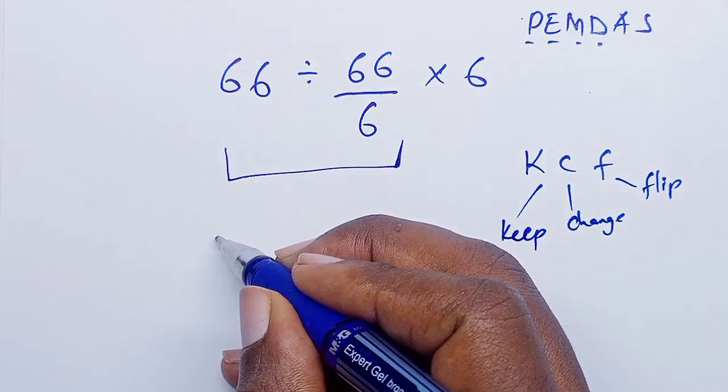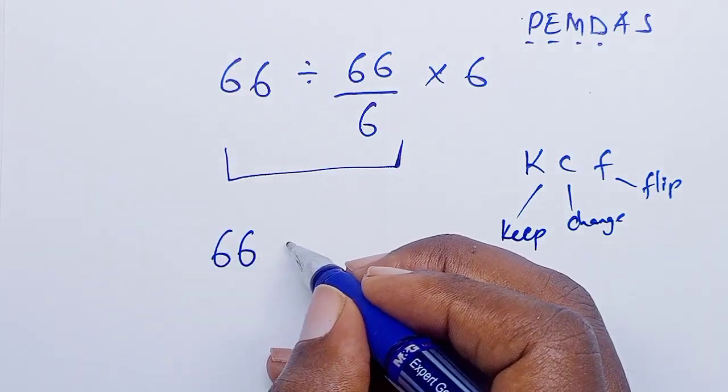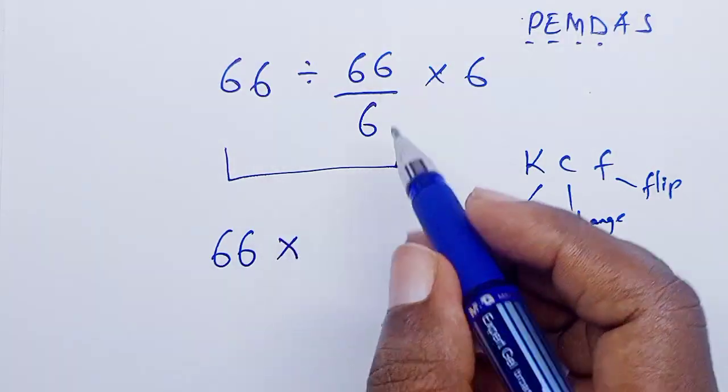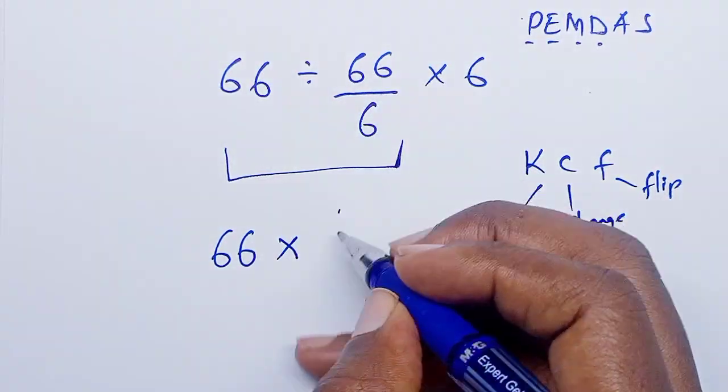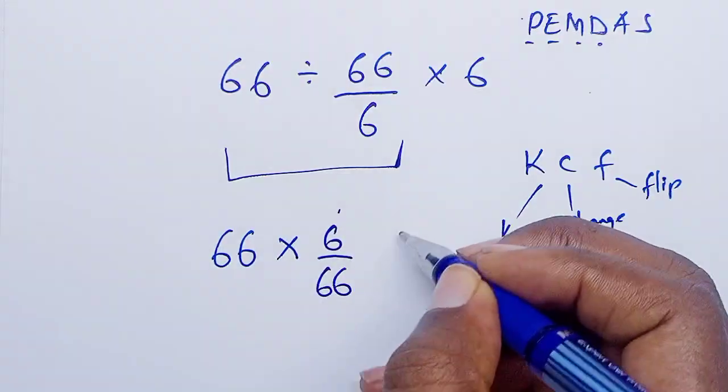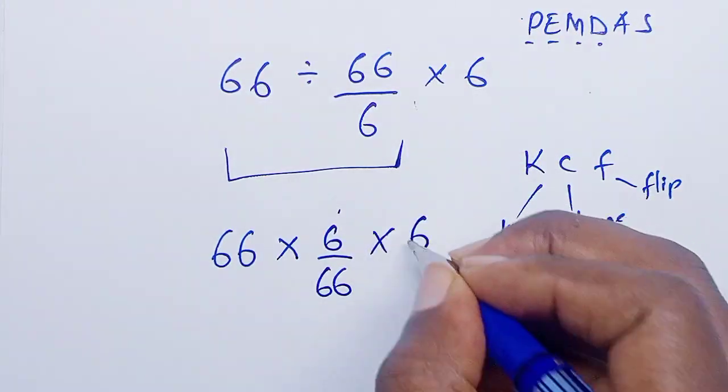So we have: keep the first value which is 66, change the sign from division to multiplication, and then flip this value from 66 over 6 to 6 over 66, then you multiply times 6.